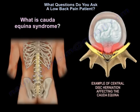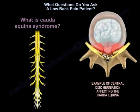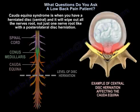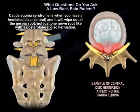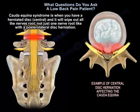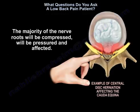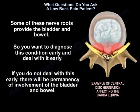What is cauda equina syndrome? It occurs when a herniated disc is central and wipes out all the nerve roots — not just one, as in a typical disc herniation. The majority of the nerve roots are compressed and affected. Some of these nerve roots provide function to the bladder and bowel, so you want to diagnose this condition early and deal with it early.